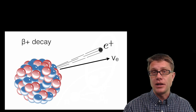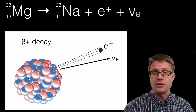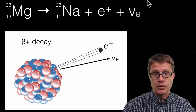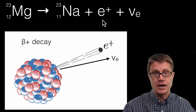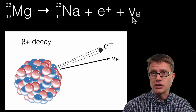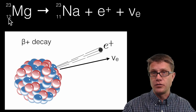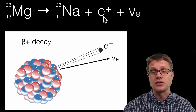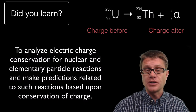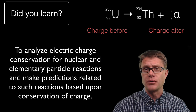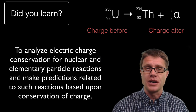Now let's look at beta plus decay. In the decay of magnesium-23 into sodium-23, we are producing a positron and an electron neutrino. On the left side the charge is 12+. On the right side, sodium has 11+ plus the positron contributes a +1 charge, giving 12+. So did you learn to analyze electric charge and know that charge is conserved before and after a nuclear reaction? I hope so, and I hope that was helpful.